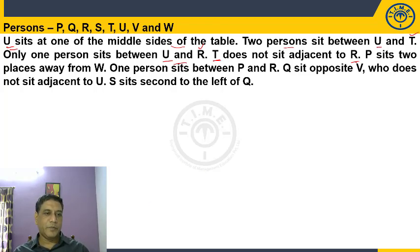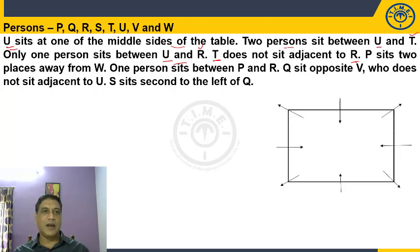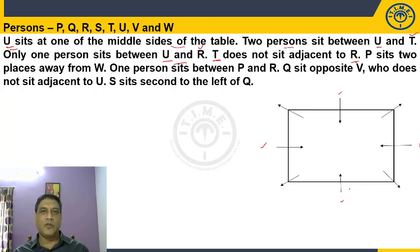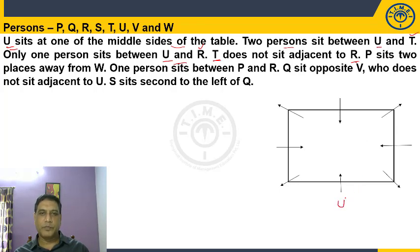Now let us see how to solve this. We draw the arrangement. U sits at one of the middle of the sides of the table. In circular arrangement, we can take the first person anywhere on the circle since it is cyclic in nature. So we place U at one of the four middle-of-side positions. The first statement is used. This part is done.